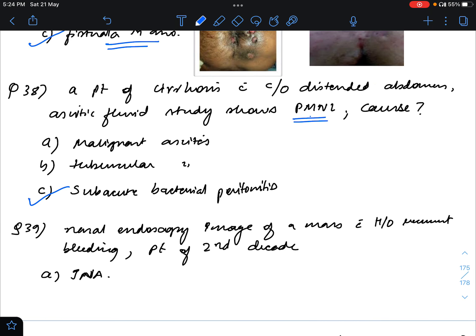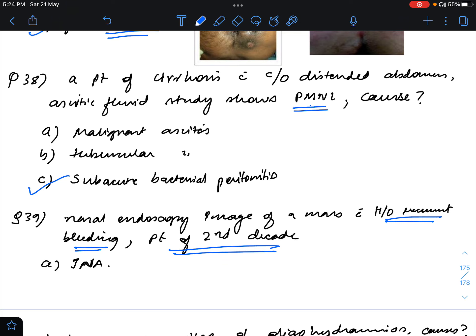Question 39: Nasal endoscopy image was given of a mass and there was history of recurrent bleeding, which was one of the big hints. The biggest hint was that the patient was of second decade. Among the adolescents, the most common tumor is juvenile nasopharyngeal angiofibroma which has recurrent epistaxis, so that will be the answer.